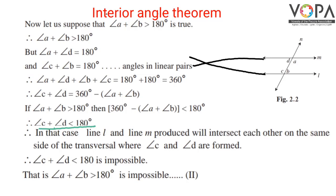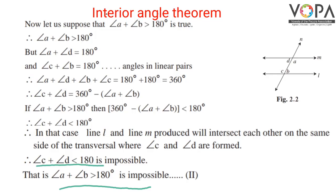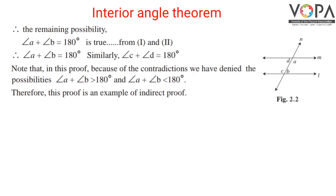In that case, line L and line M produced would intersect on the same side of the transversal where angle C and angle D are formed. Therefore, angle C plus angle D less than 180 degrees is impossible, meaning angle A plus angle B greater than 180 degrees is also impossible. The remaining possibility — angle A plus angle B equals 180 degrees — must be true. Similarly, angle C plus angle D is also equal to 180 degrees.